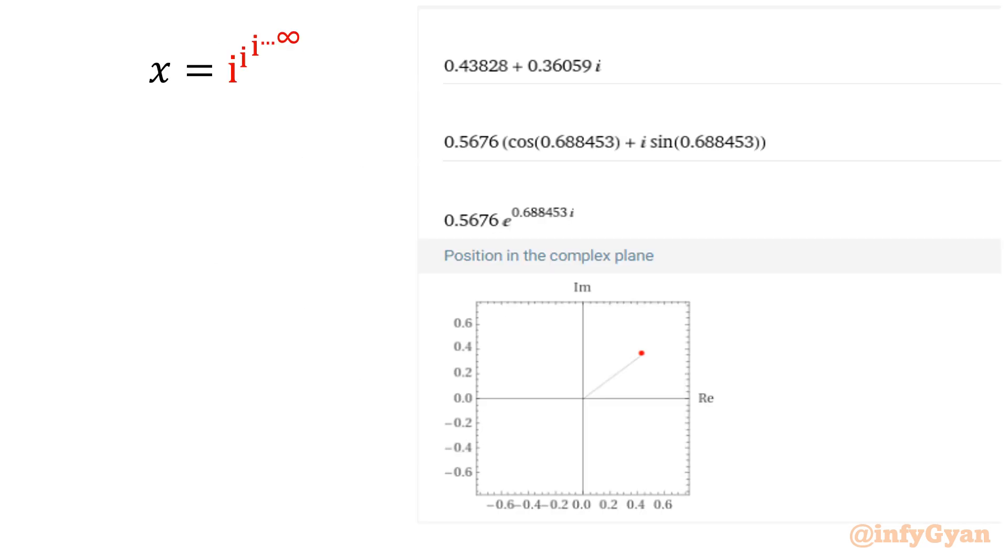Let me take you to the Wolfram Alpha graph. It is showing that complex number in argand plane. If you will notice, 0.43828 plus 0.36059i was our solution. Second form is in cis form, third form is in exponent form. So polar form, cis form, and complex number form with argand plane demonstration. Here you can see the values, there are multi-complex number values possible. That's it.